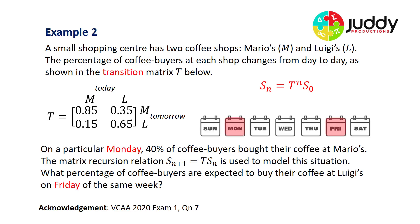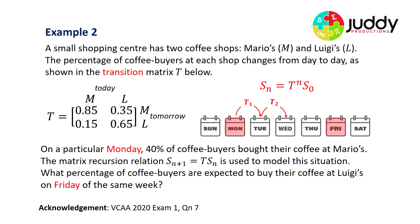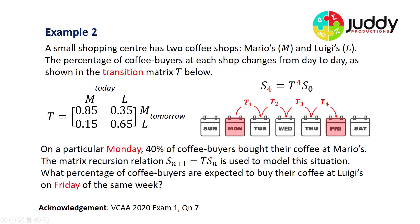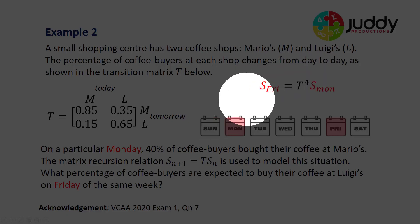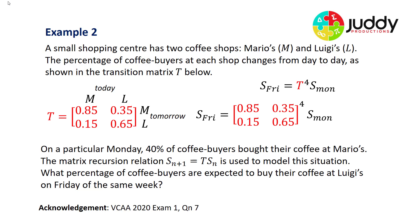We can use this recurrence rule to calculate the state matrix in the future after multiple transitions. We're going from Monday all the way to Friday. That involves one transition, two transitions, three and four. So we replace the N in our equation with the number four, because this particular question involves the undertaking of four transitions. We're calculating from the Monday state to the Friday state, which involves four transitions. First, we substitute in our transition matrix.